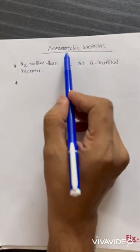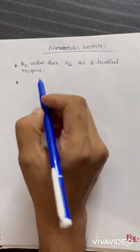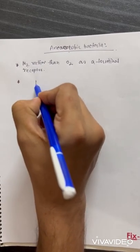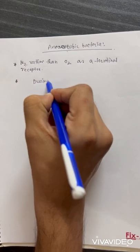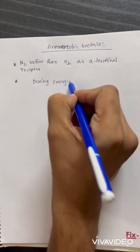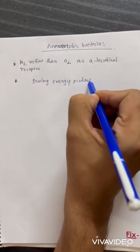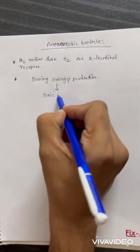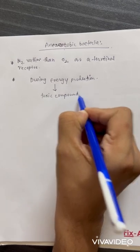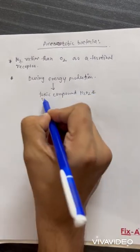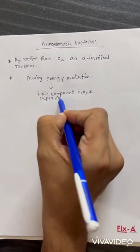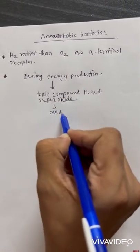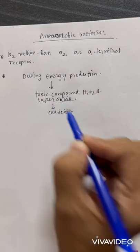Another thing you need to know is why anaerobic bacteria die in the presence of oxygen. In the presence of oxygen, during energy production, they use oxygen, and some toxic compounds are produced — like peroxide and superoxide — which cause cell death.